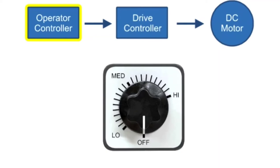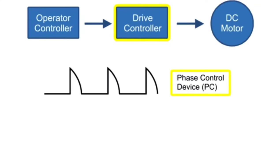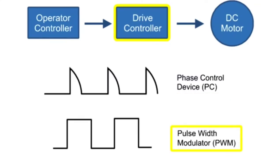One of the functions an operator controller provides is a method for altering the speed of the motor. The drive controller will regulate the input by means of either a phase control device or a pulse width modulator.